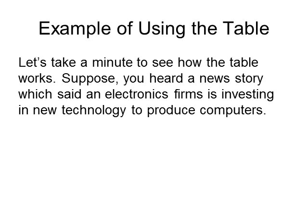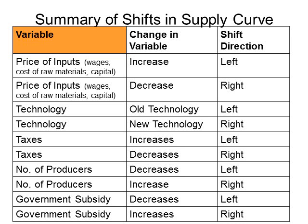Let's take a minute and see how the table works. Suppose you heard a news story which said an electronics firm is investing in new technology to produce computers. First, we need to look at the variable column. We look down the list — the first two items deal with price of inputs, so they're not relevant here because we're talking about a firm increasing its use of technology. Moving down to technology, we need to find out what the firm is doing: is it applying new technology or using older technology?